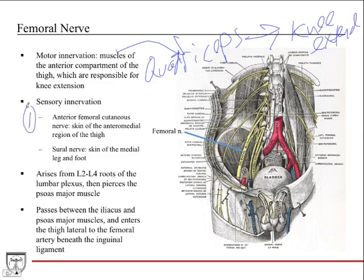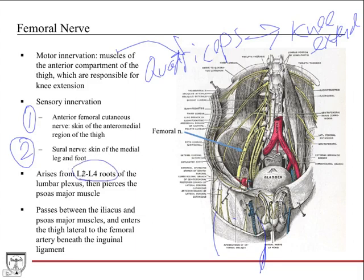Sensory innervation has two main branches. First, the anterior femoral cutaneous nerve, which does the skin over the anterior medial region of the thigh. Then it has the saphenous nerve, which is a branch off the terminal portion of the femoral nerve and does the skin of the medial leg and foot — more distal to the knee than the thigh. It arises from L2 to L4 roots and pierces the psoas major muscle.